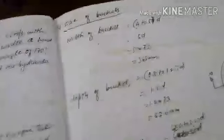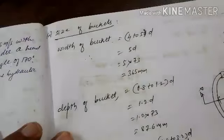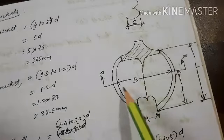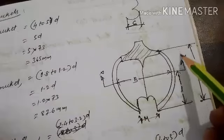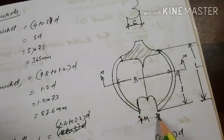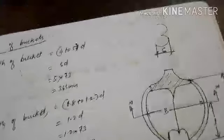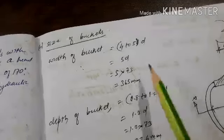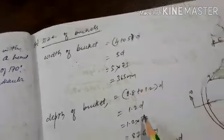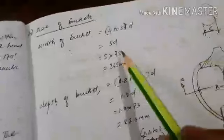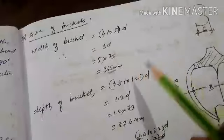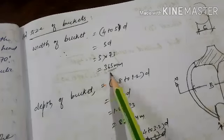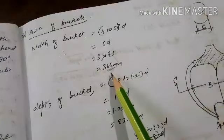Once jet diameter is known, bucket dimensions can be calculated. The plan of the bucket shows width B and radial length. Width of bucket B = 4 to 5 times jet diameter d. Taking B = 5d gives B = 365 millimeter for smooth working of the Pelton wheel.